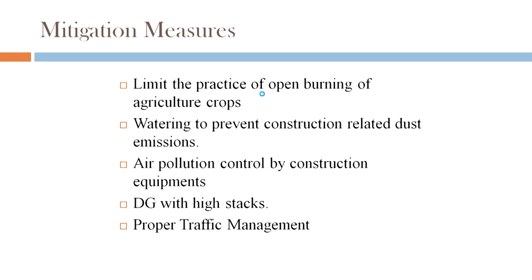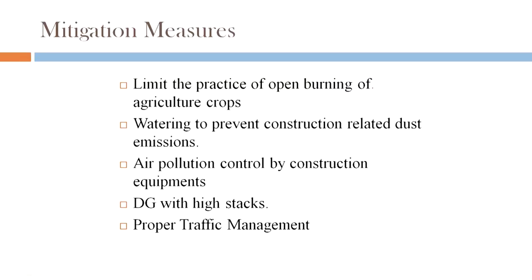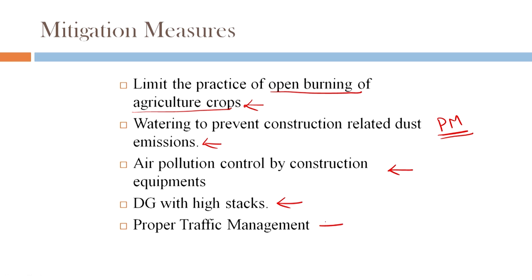Mitigation measures: unlike water, you cannot really capture air and treat it, so you have to treat it at the source. Aspects relevant to India include limiting open burning of agricultural crops — easier said than done due to socio-economic concerns for farmers. Watering to prevent construction-related dust emissions, since debris contributes a lot to particulate matter. Air pollution control by construction equipment, diesel generators with high stack heights, and proper traffic management with greater vehicle occupancy are also important measures.